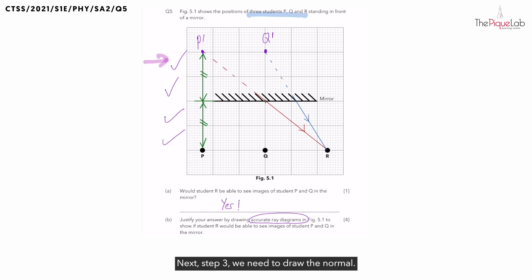Next step three, we need to draw the normal. Remember the normal must be perpendicular to the surface of the mirror and it must touch both the reflected and incident rays. So we can do the same for Q.